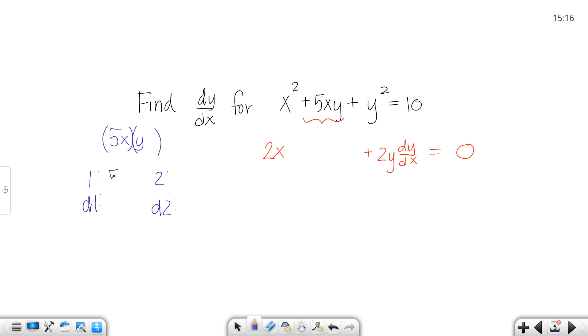So function 1 is 5x and function 2 is y. And that's how we're going to break it apart. So d1 would be 5. It doesn't need any extra dy/dx's in there because it's just an x. And the derivative of 2, which would be the derivative of the y function, would be 1 dy/dx.